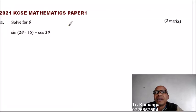Hiya, question number 11. Solve for theta: sin(2θ - 15) = cos 3θ. And you get two marks.